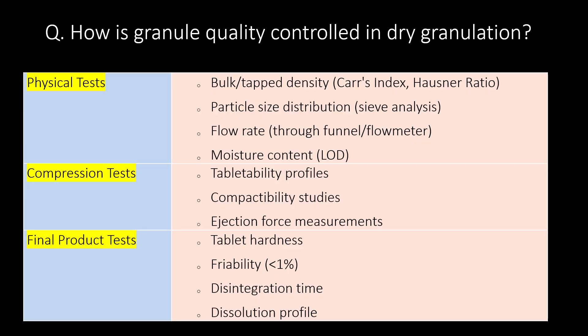A very important question: how is granule quality controlled in dry granulation? First, physical tests — bulk and tap density, particle size distribution, flow rate, and moisture content. Second, compression tests — tabletability profiles, compactibility studies, and ejection force measurements. Third, final product tests — tablet hardness, friability, disintegration time, and dissolution profile.